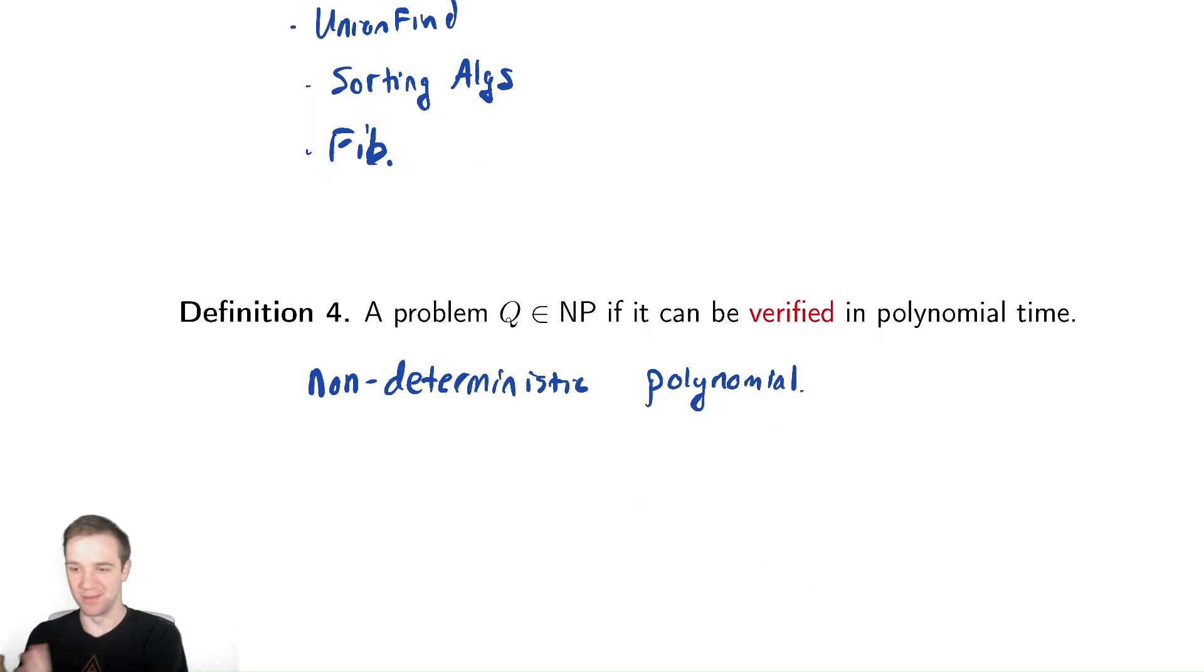I might get scolded by some people for saying this, but I'll give a rough idea of what non-determinism is. You could solve this in polynomial time if you were just clever enough at some point. Given several options, if you could always somehow choose the correct option, you could do this in polynomial time. That's what this is saying.